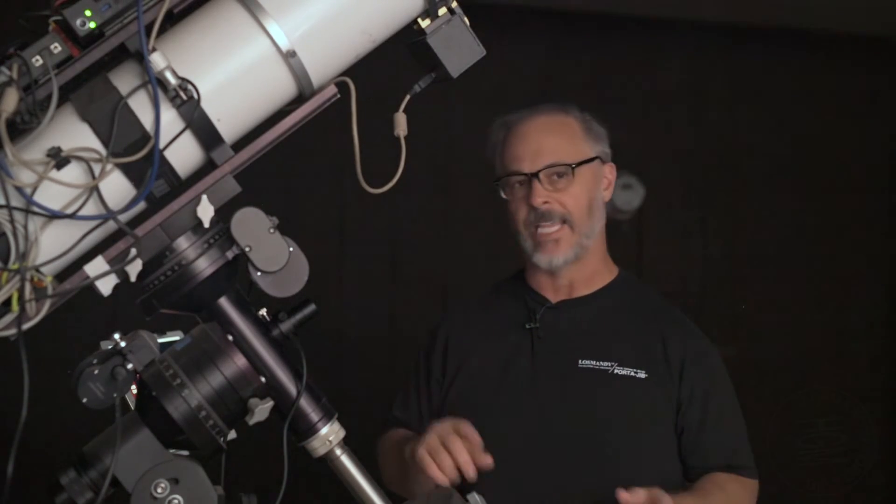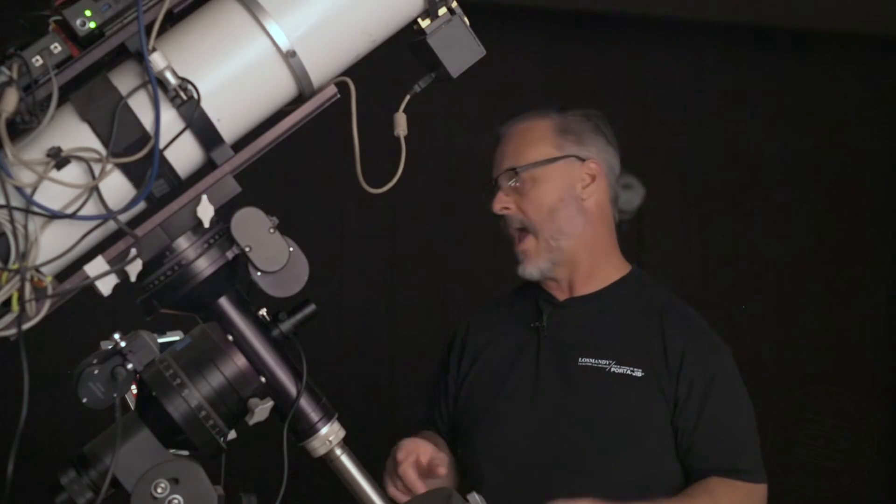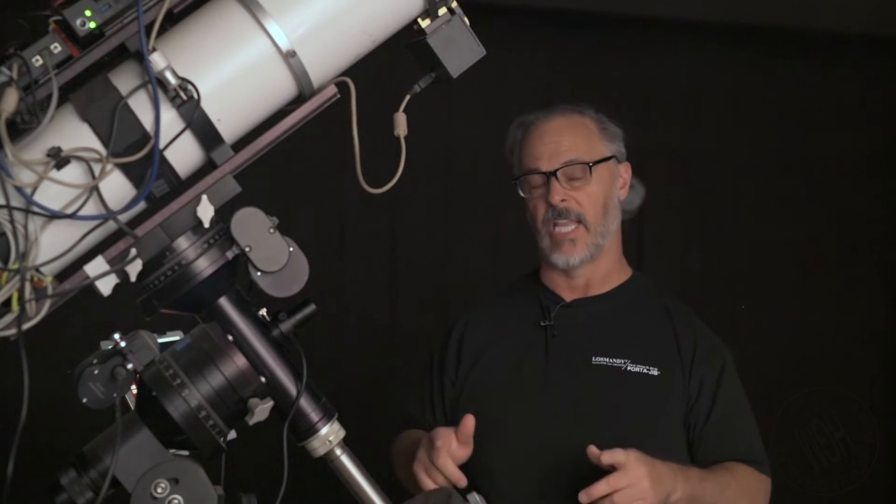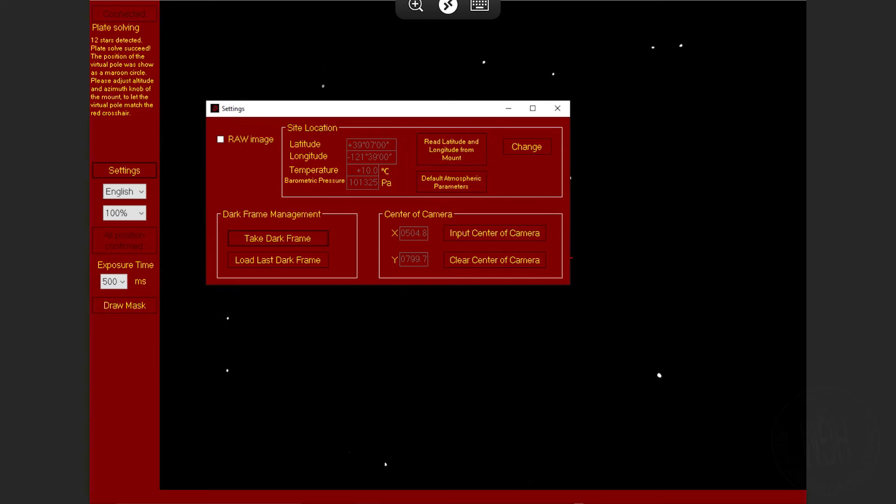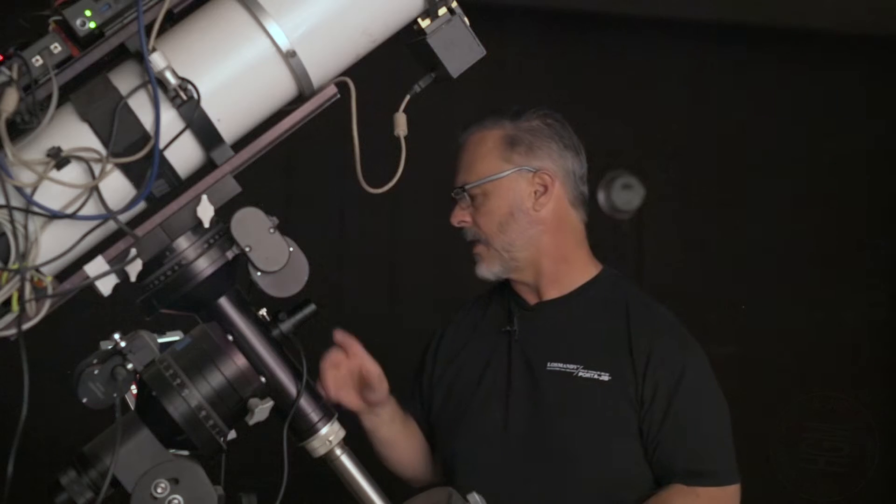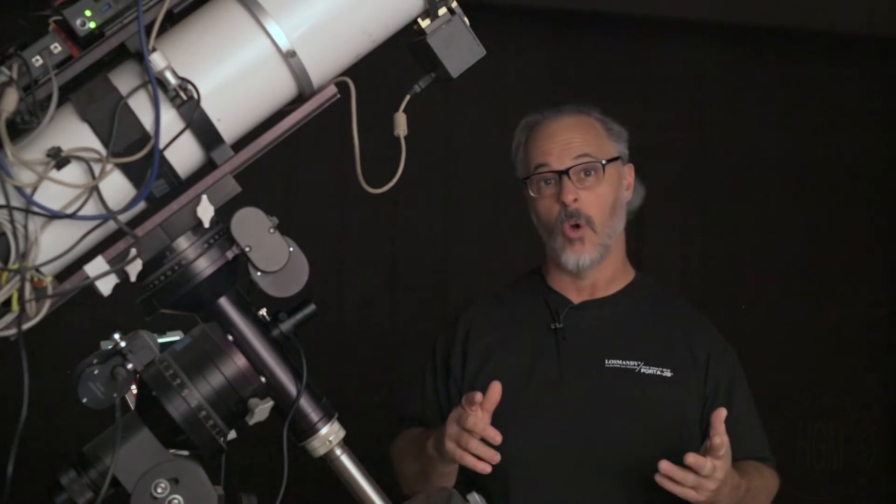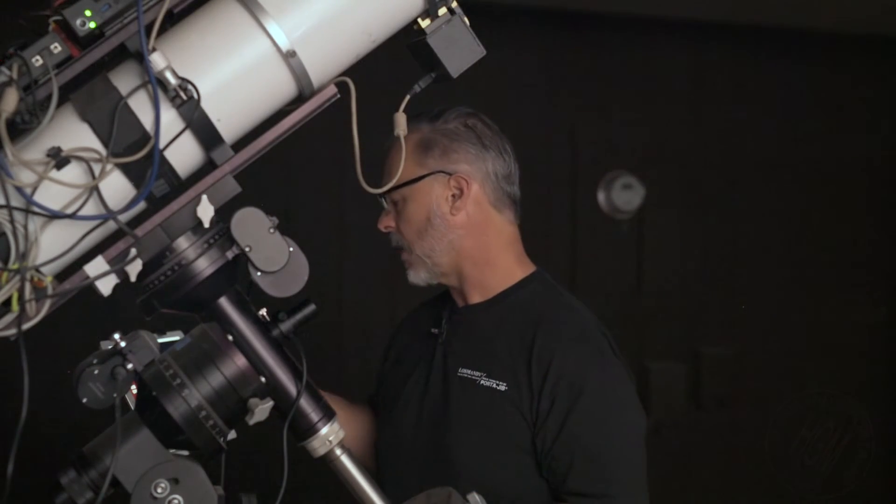Now the next part is we want to get the site location information from our mount. So again, the mount's already connected and it's powered on and I've set the settings correctly. So I'm going to go ahead and just say read the latitude and longitude from the mount. I'm going to press that. I'm going to say OK. And it said it was successful. There is my latitude and there is my longitude and it looks like it's also reading the temperature as well. So we are ready to go in terms of doing some polar alignment.